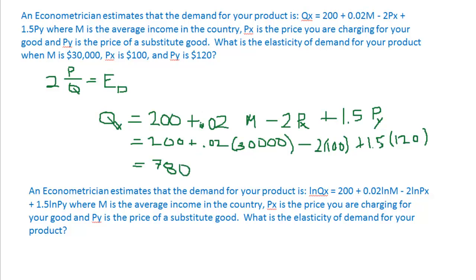Okay, so we know our price is 100, so we have 2 times 100. We know quantity is 780. And if I calculated it correctly, I think that is 0.256. So it's inelastic. We have an elasticity less than 1, it's 0.256.